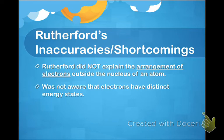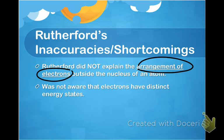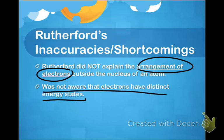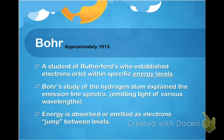Rutherford discovered a lot — he was able to discover the nucleus and that positive charge is in the center of the atom. But Rutherford did not explain the arrangement of electrons outside the nucleus, which is extremely important because the arrangement and behaviors of electrons outside the atom ultimately explain chemical bonding and the chemical behaviors of an atom. He was not aware that electrons have distinct energy states.